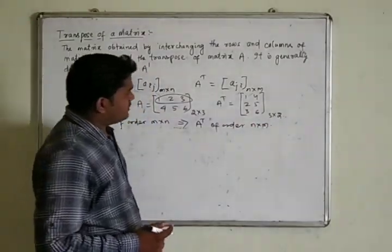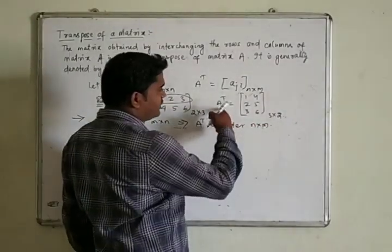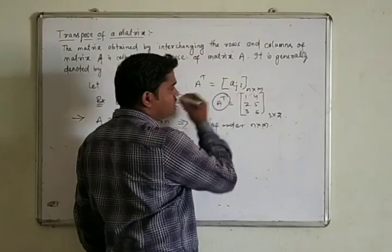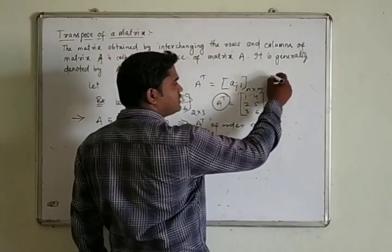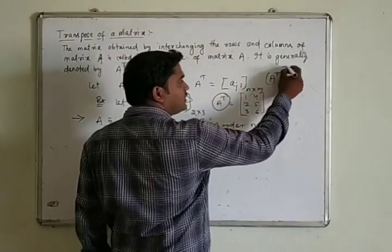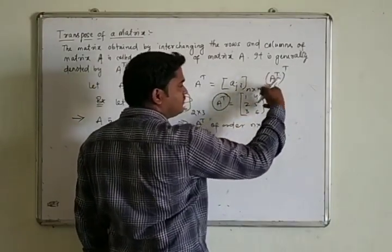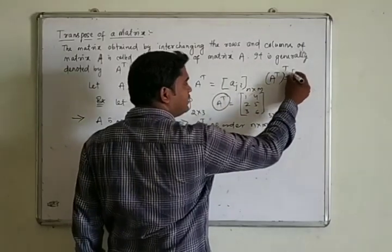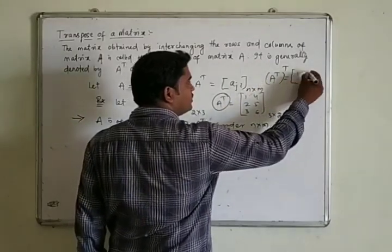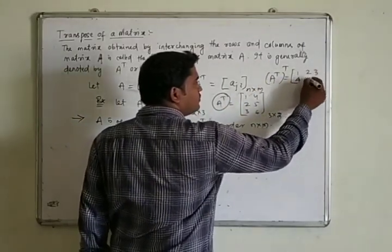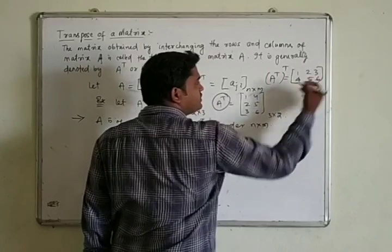If we again transpose this matrix, that means the transpose of A^T, we get back [1, 2, 3, 4, 5, 6], which is the original matrix of order 2×3. So the transpose of A^T equals A.